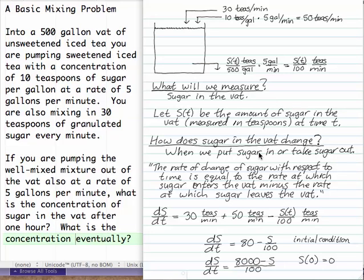How does sugar in the vat ever change? It can only change if you put sugar in or take sugar out. So you can say the rate of change of sugar with respect to time is equal to the rate at which sugar enters the vat minus the rate at which sugar leaves the vat.